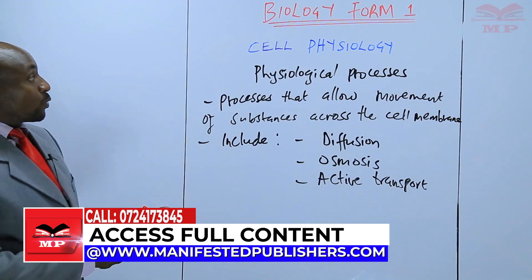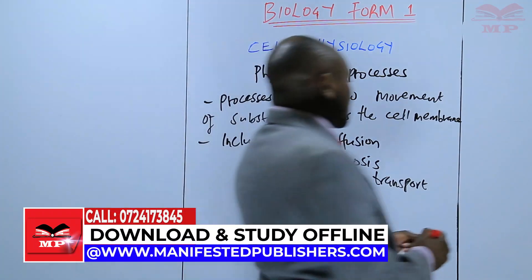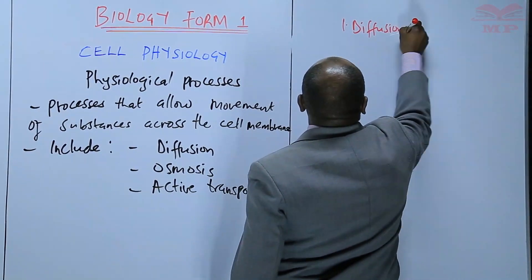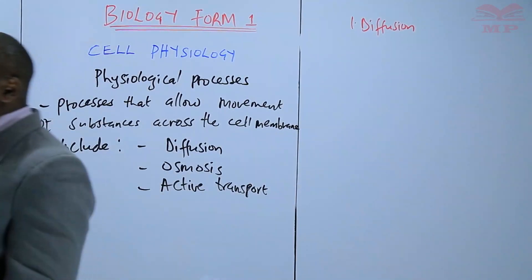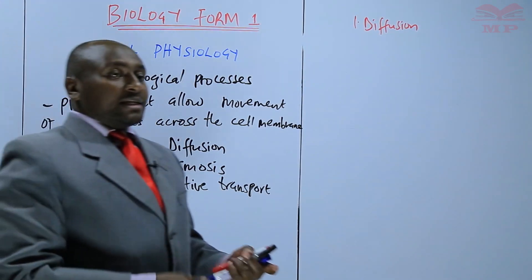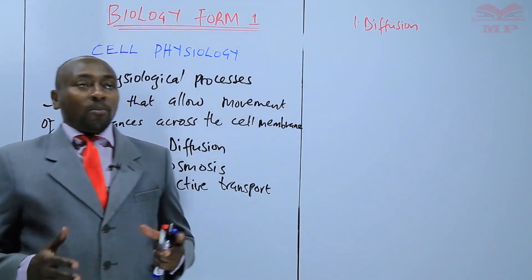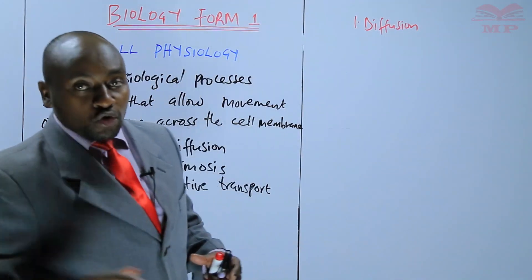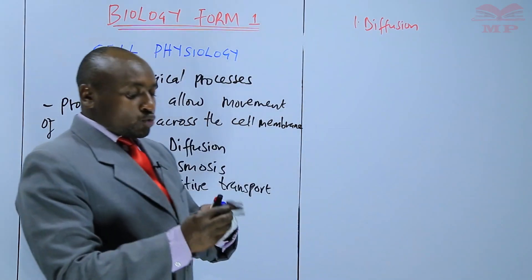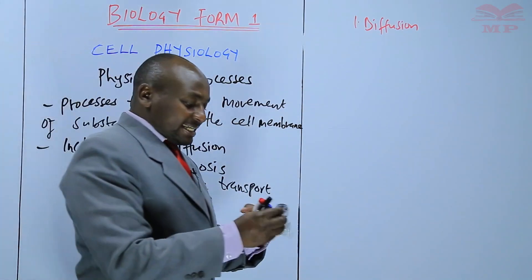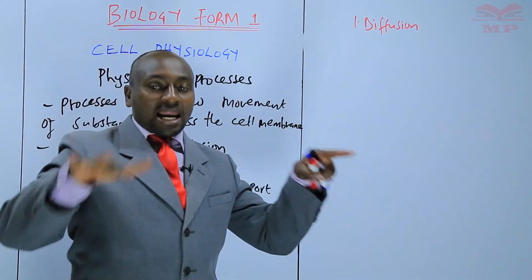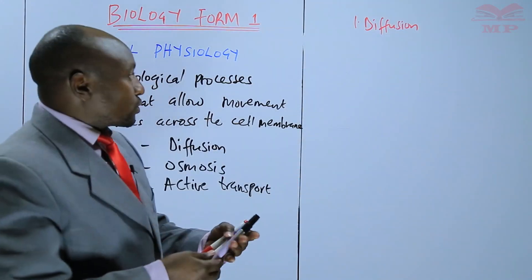We will start with the first process, and this is diffusion. We want to ask ourselves: what does the word diffusion mean? Diffusion is the movement of particles from a region of high concentration to a region of low concentration until an equilibrium is established — until the two regions are balanced, until they have the same concentration.